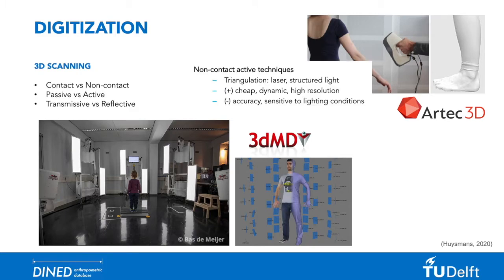The Artec Eva is a versatile handheld scanner that uses a non-contact active digitization technique. This scanner projects safe-to-use structured light on an object to capture its surface. It is relatively cheap, easy to use, and captures surfaces at a high resolution. The disadvantage of this method is its sensitivity to lighting and motion artifacts.